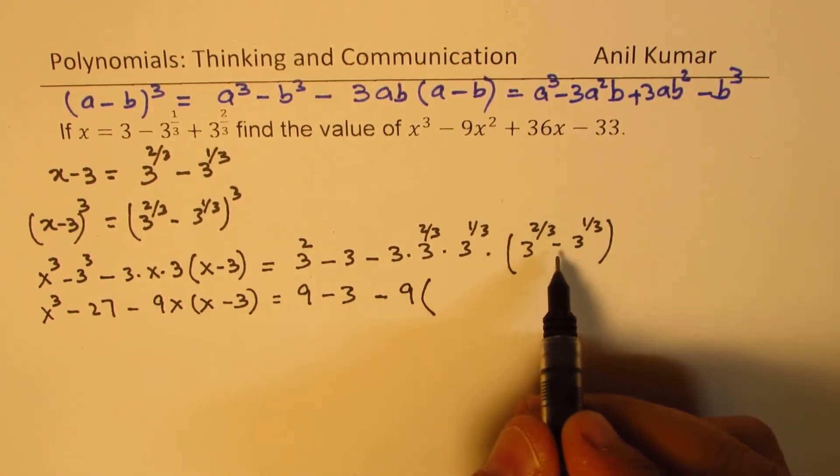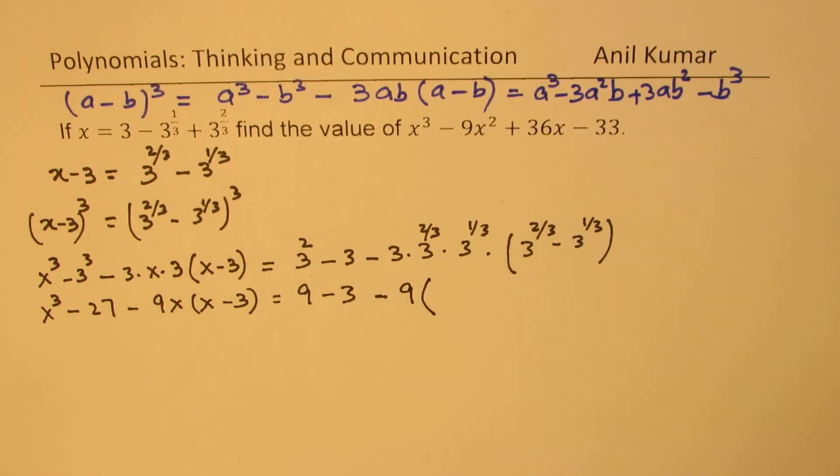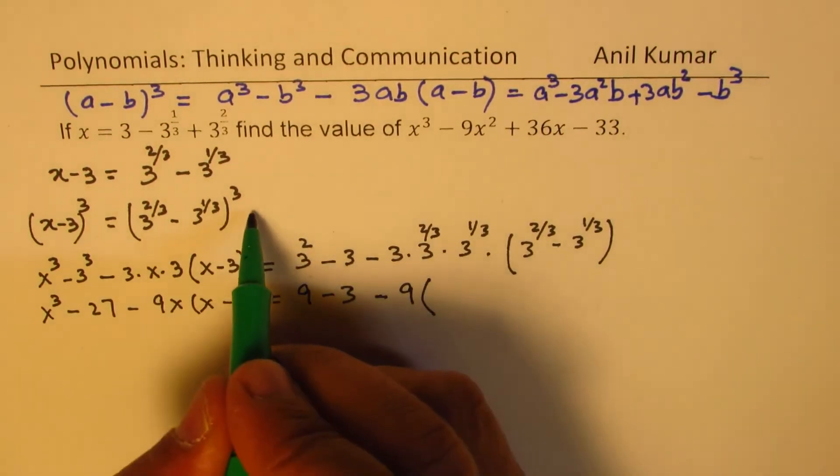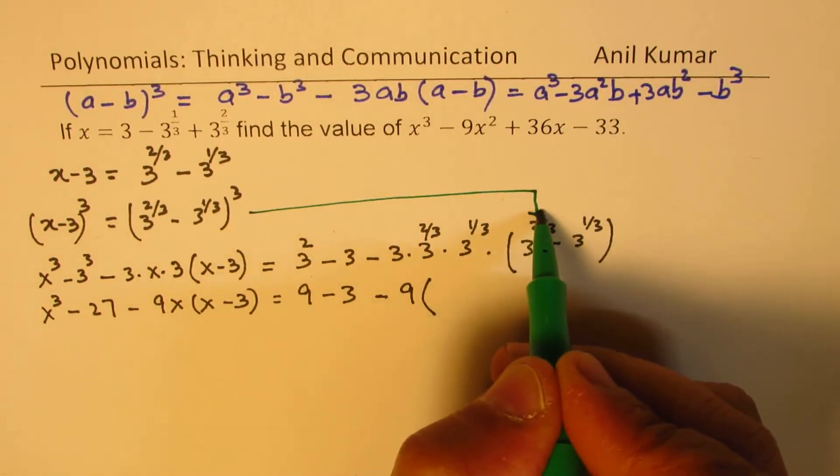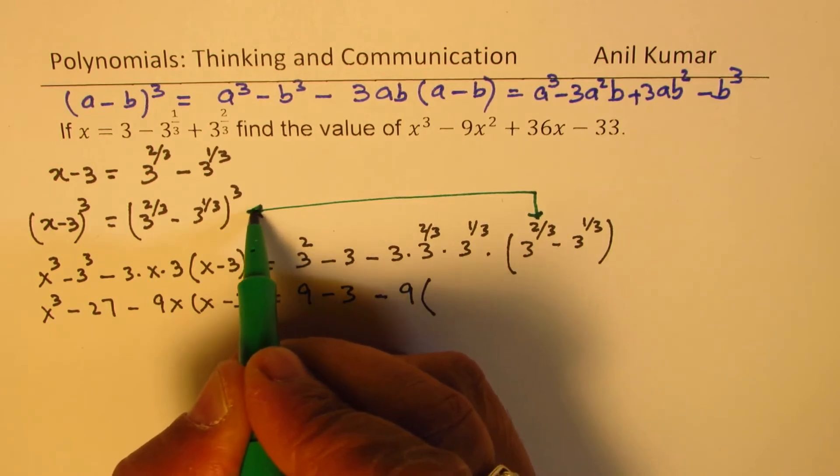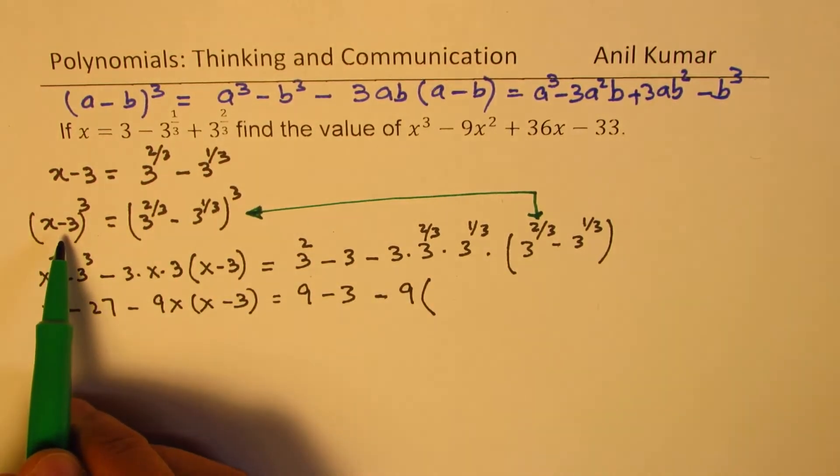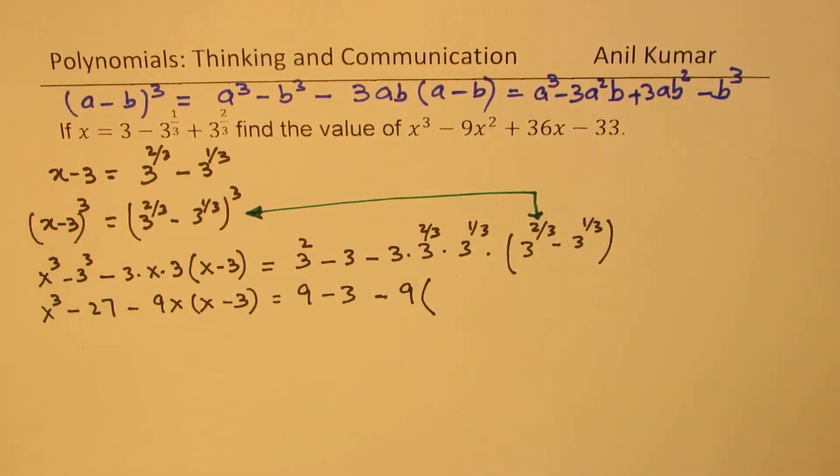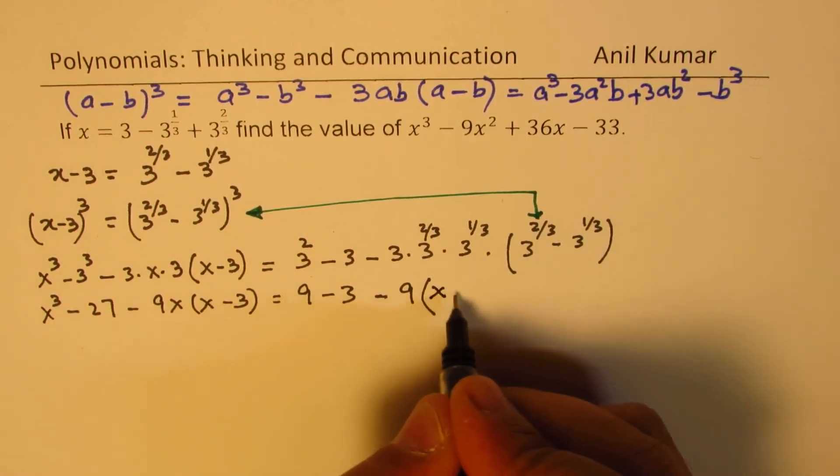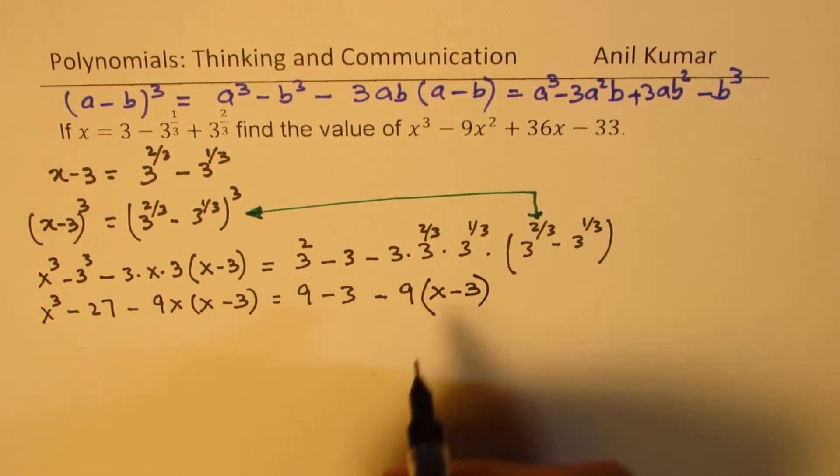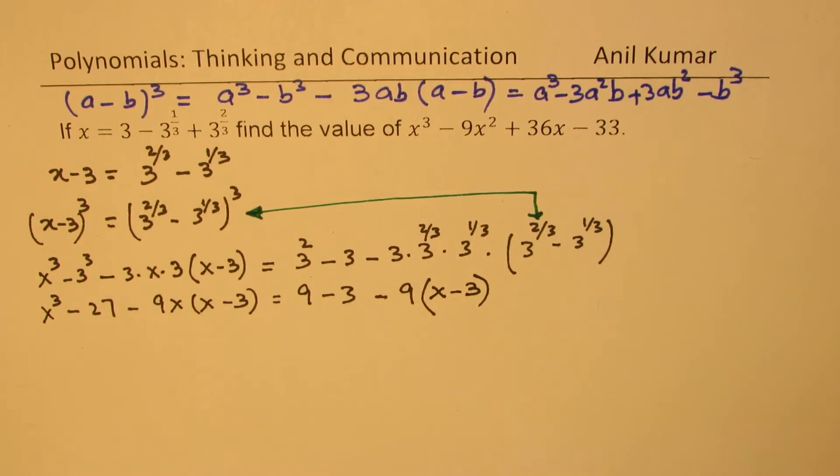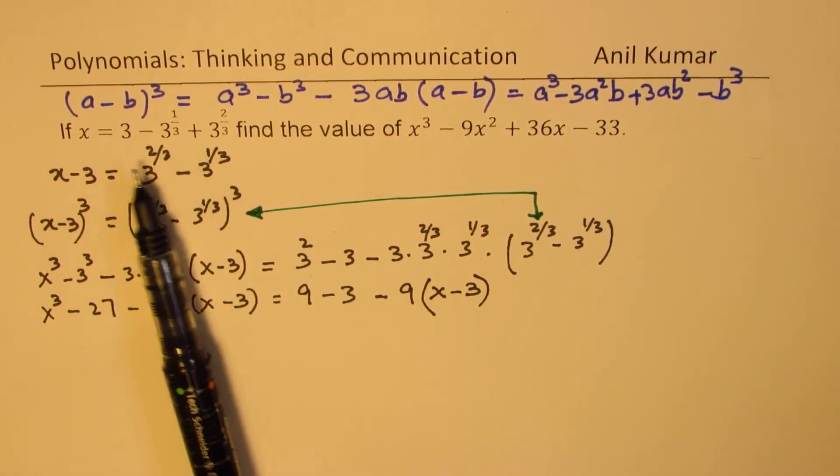Now what is 3 to the power of 2 over 3 minus 3 to the power of 1 over 3? Well, you can relate this. So that is x minus 3. So we can write this as x minus 3. Do you see the beauty? So at this stage, we got rid of these radical exponents.